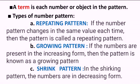Now we need to know what is meant by the term of a pattern. A term is each number or object in the pattern. For example, in the pattern 1, 3, 5, 7, 9, 11: 1 is the first term, 3 is the second term, 5 is the third term, and 7 is the fourth term. In this way, we can understand what a term is.